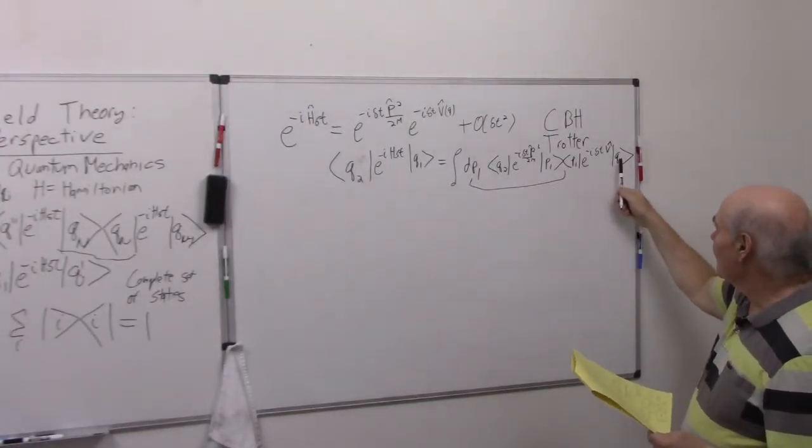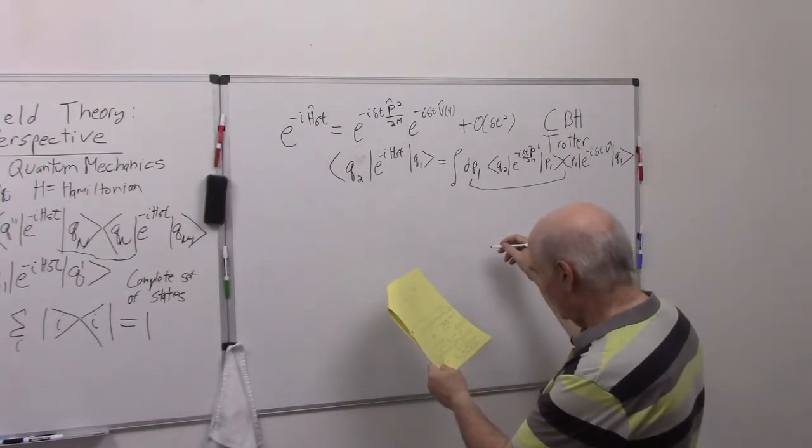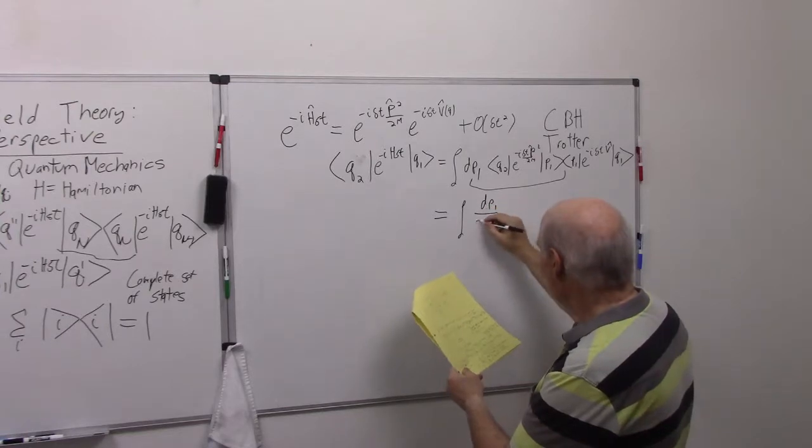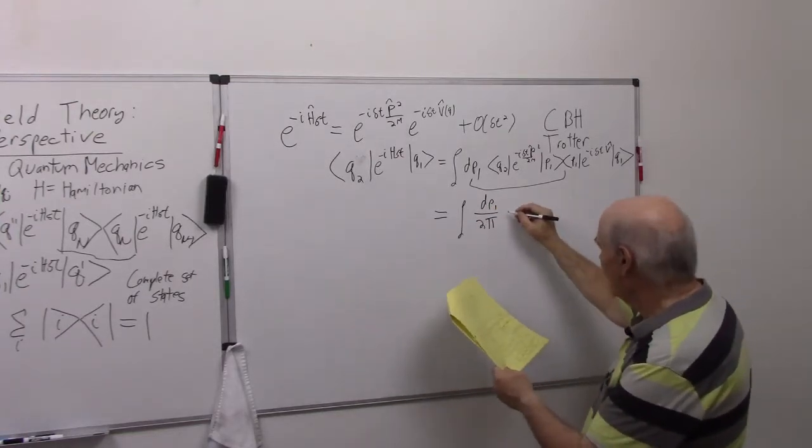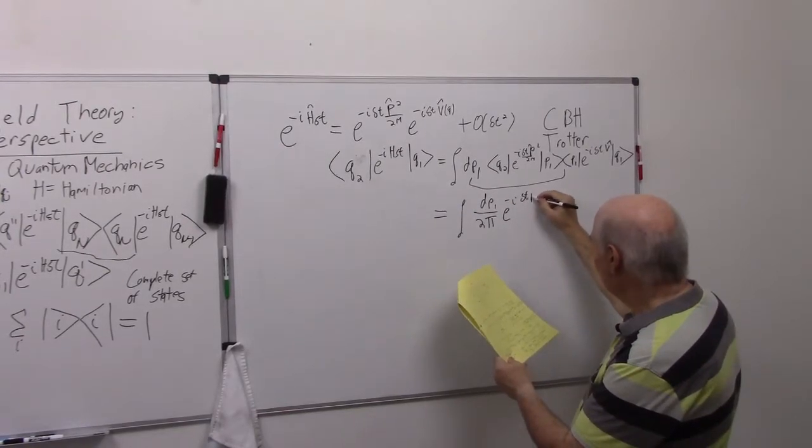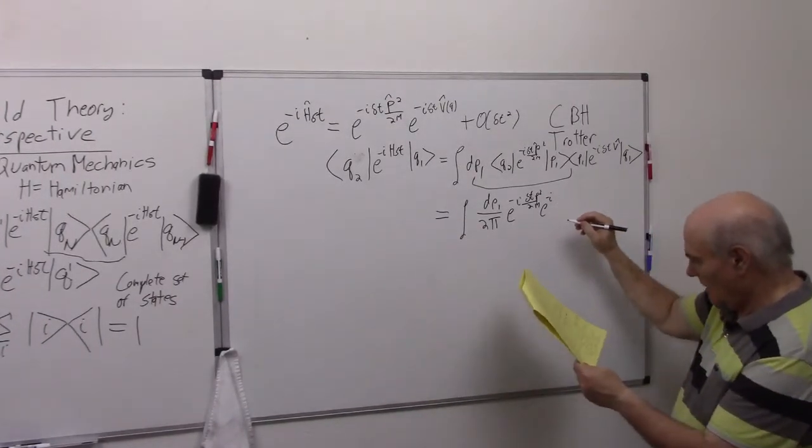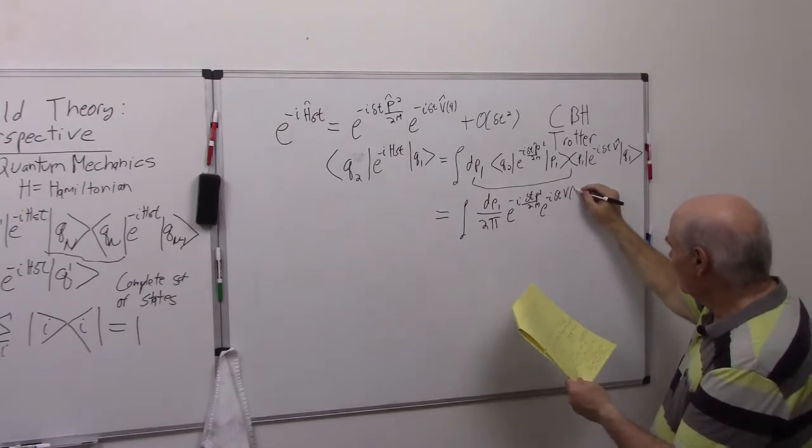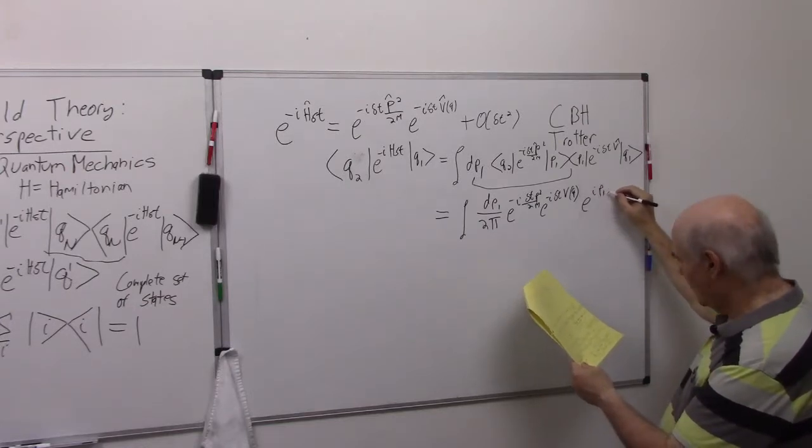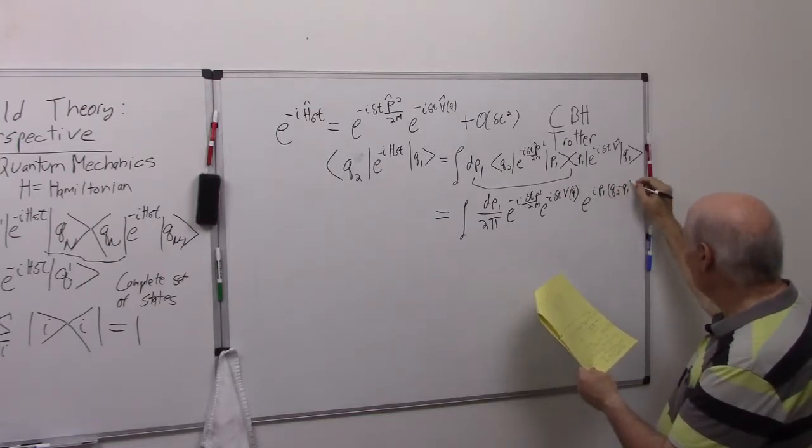So this is going to be equal to the integral dp1 over 2 pi, e to the minus i delta t p squared over 2m, e to the minus i delta t V of q, and then e to the i p1 times q2 minus q1.